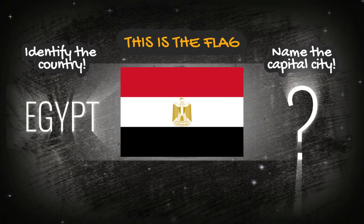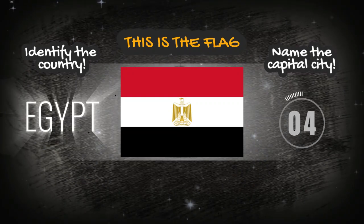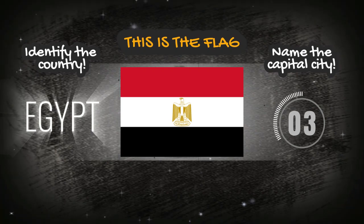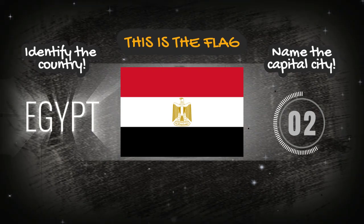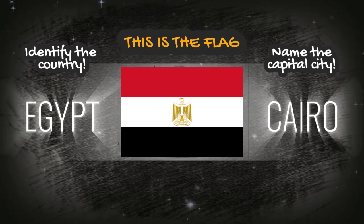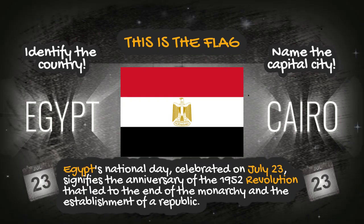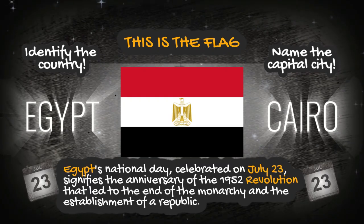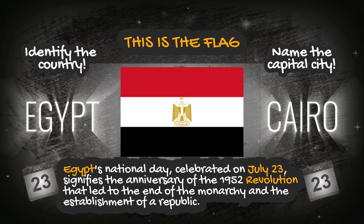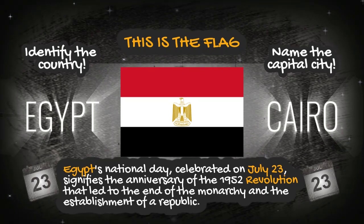The answer is Egypt. Now, if you know it, name the capital city. Egypt's National Day, celebrated on July 23rd, signifies the anniversary of the 1952 revolution that led to the end of the monarchy and the establishment of a republic.